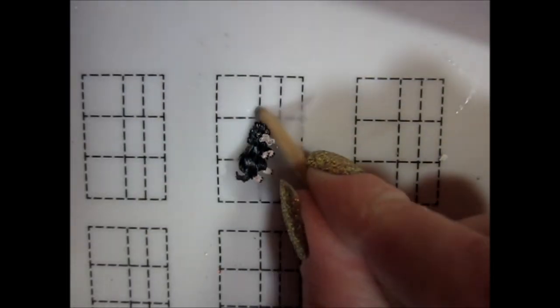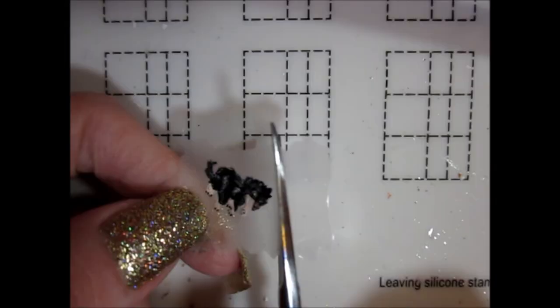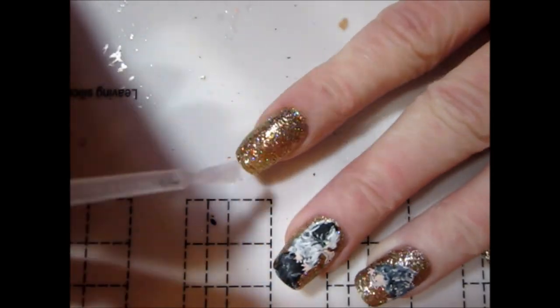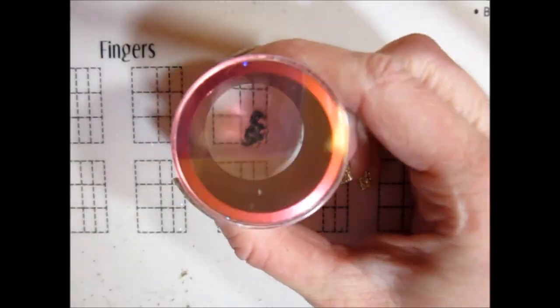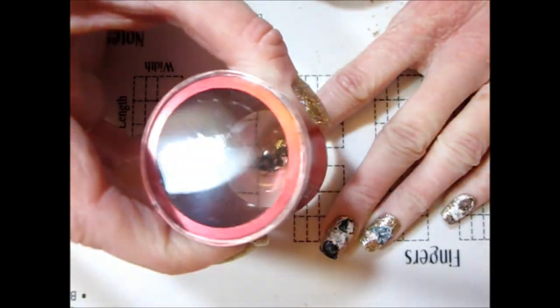I then removed all the decals from my mat and trimmed them to better fit my nails. I applied a top coat to each nail and used a silicone stamper to press the decals into the wet polish.